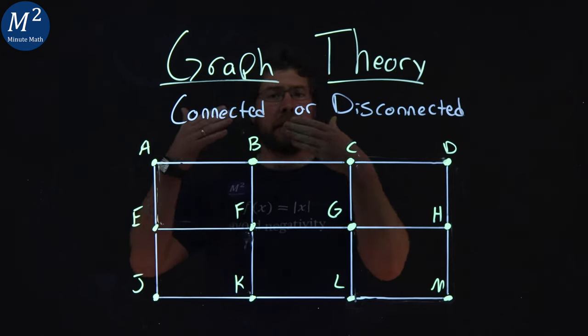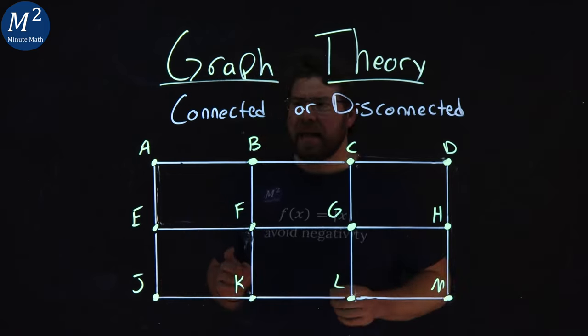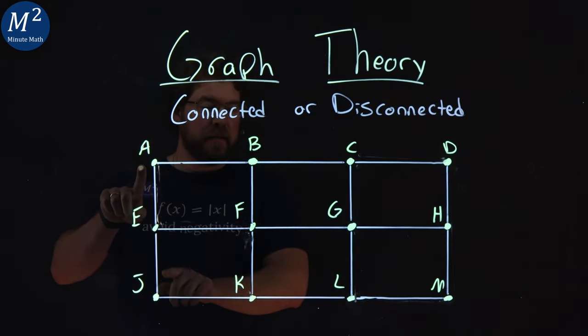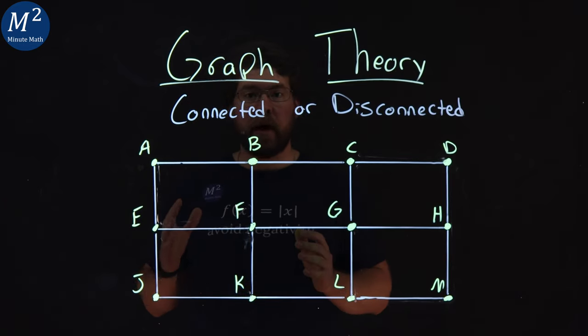What does it mean for a graph to be connected or disconnected? A connected graph means that every vertex has a path to every other vertex in your graph.